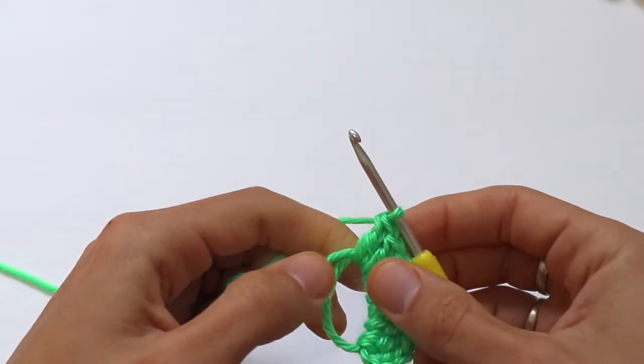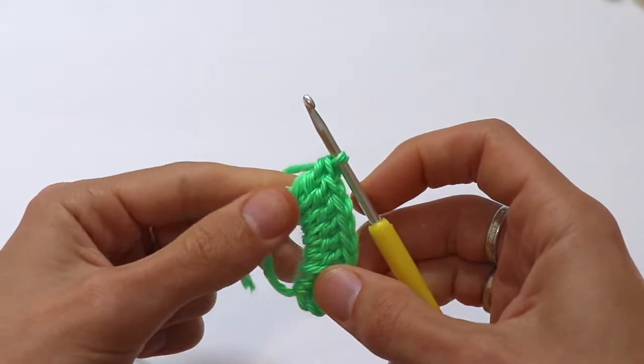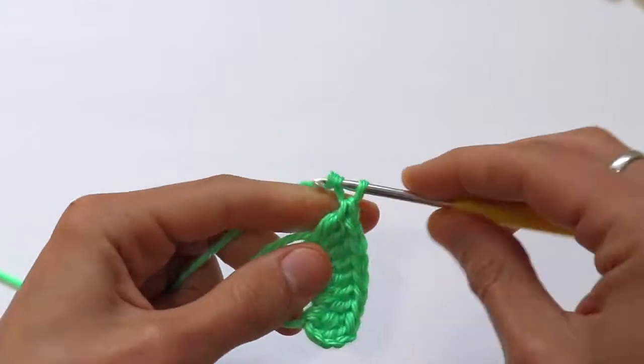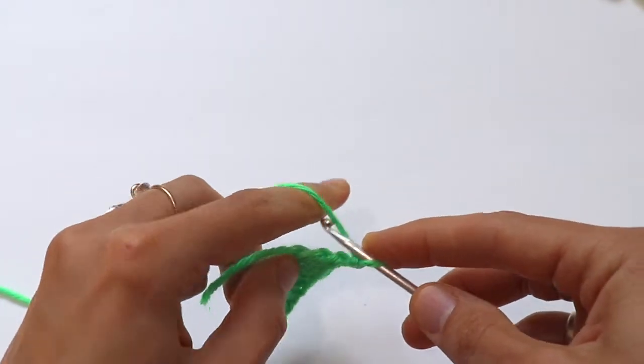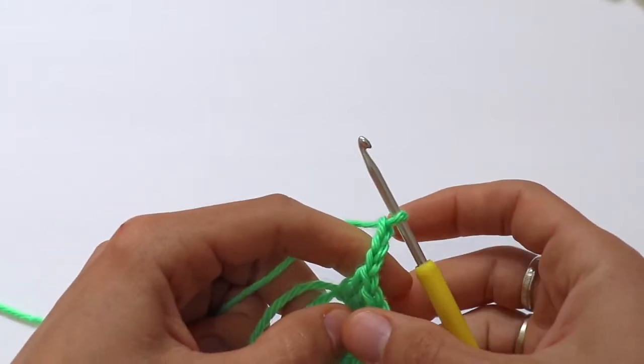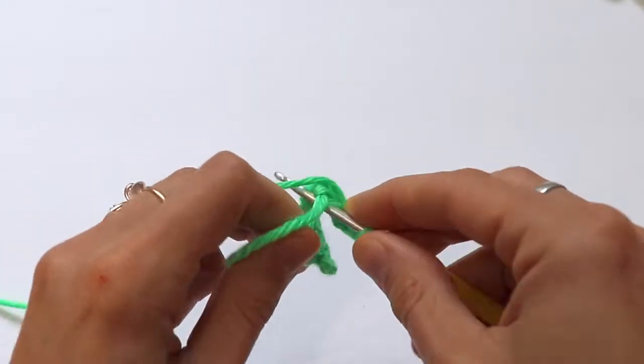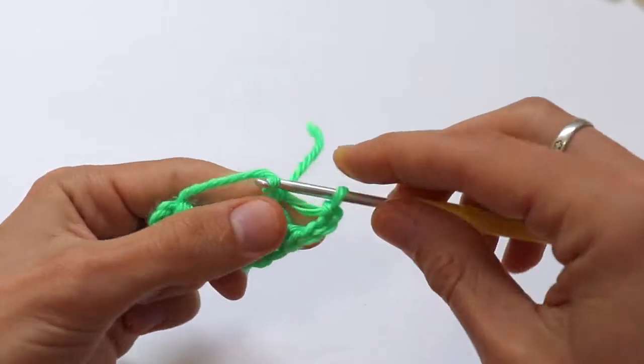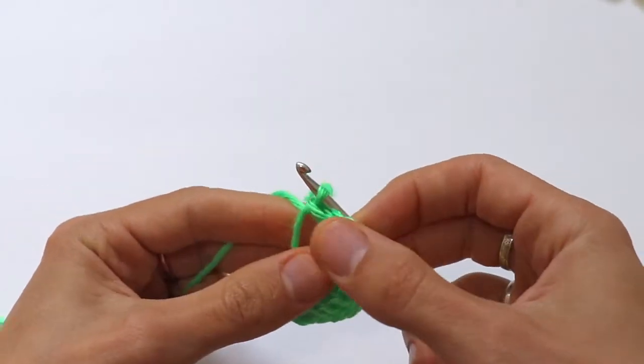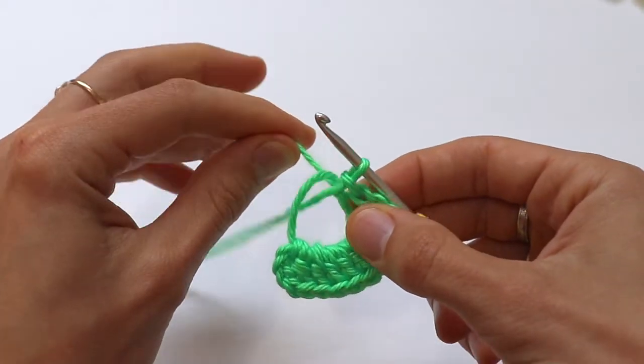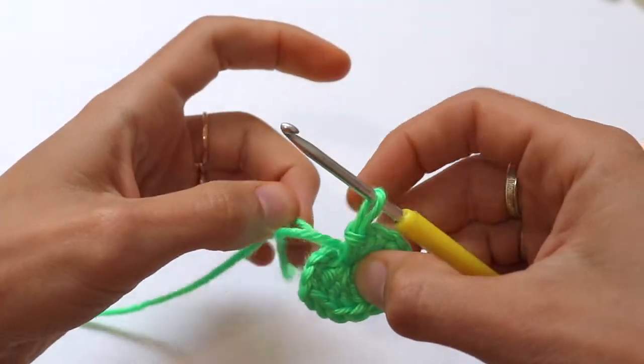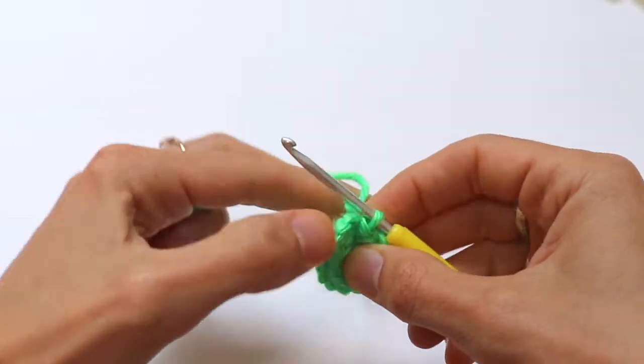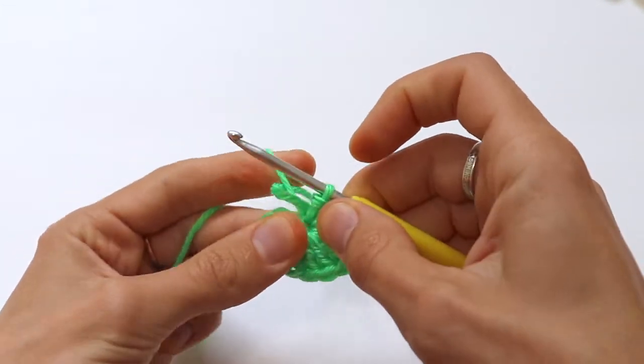Then make a chain three and join into the ring with a slip stitch. Pull the yarn and then make a chain three.